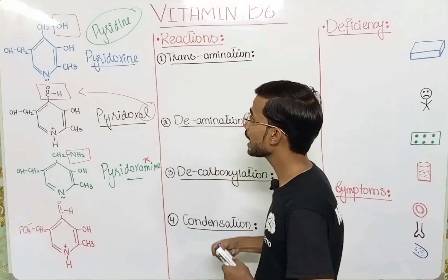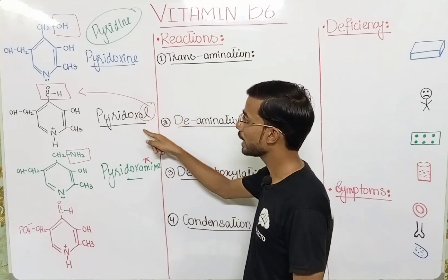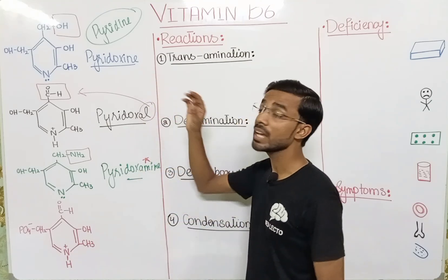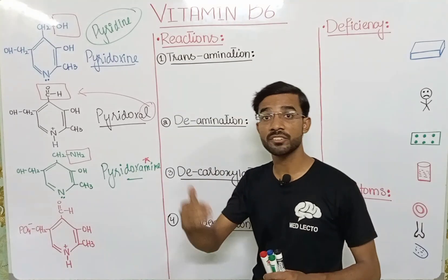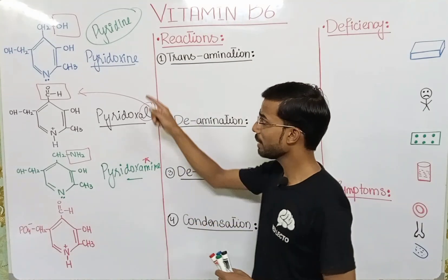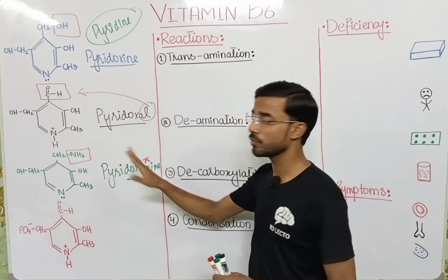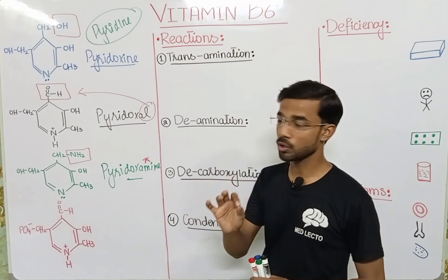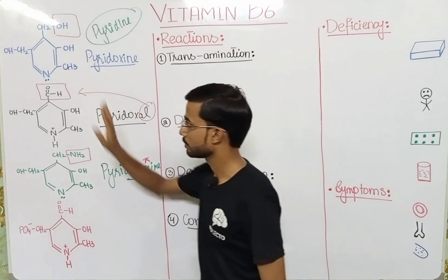So here are basically the four things: Pyridoxine, Pyridoxal, Pyridoxamine, and the R derivative that is actually derived from Pyridine. In all these rings, you will see one thing in common — that is the structure of the ring.